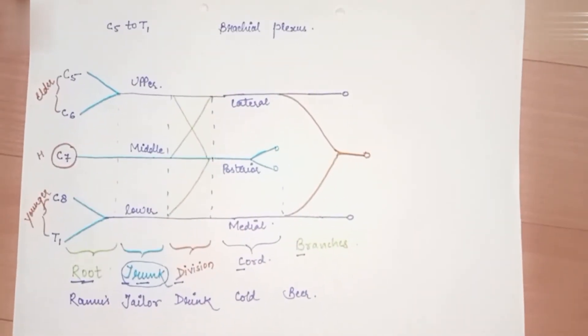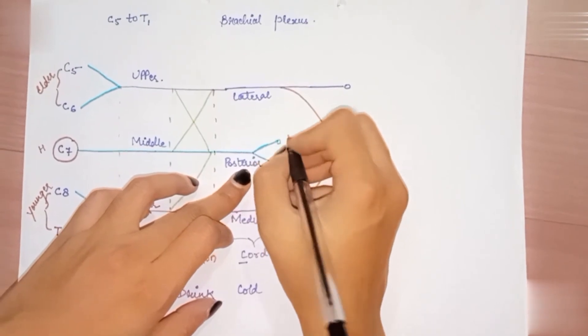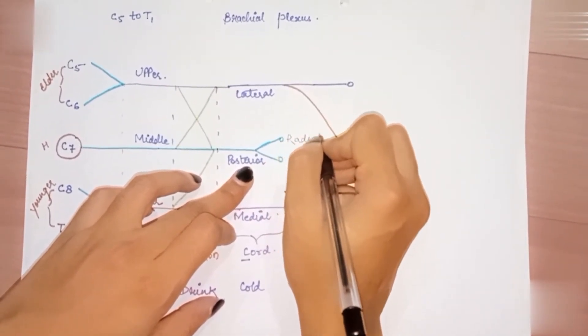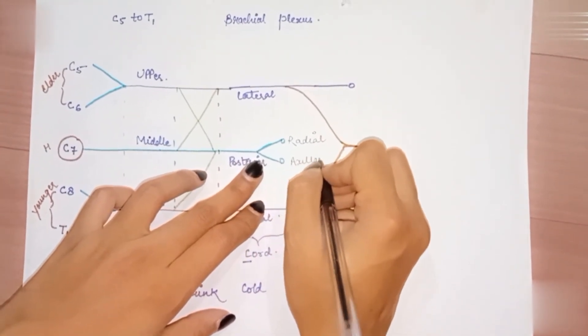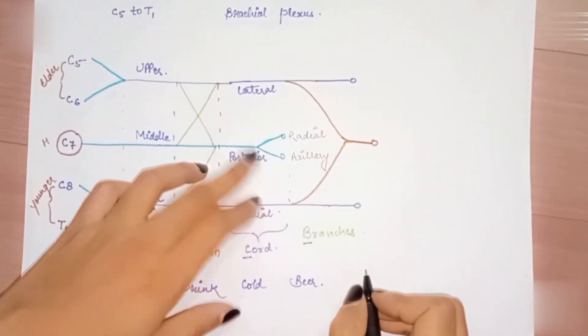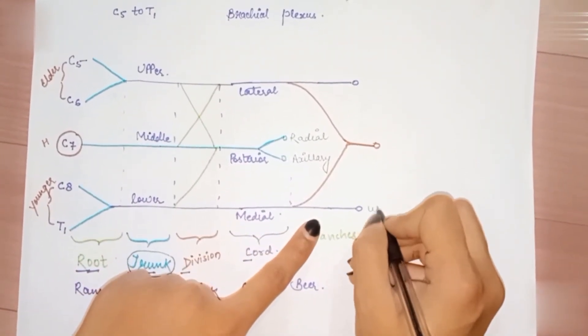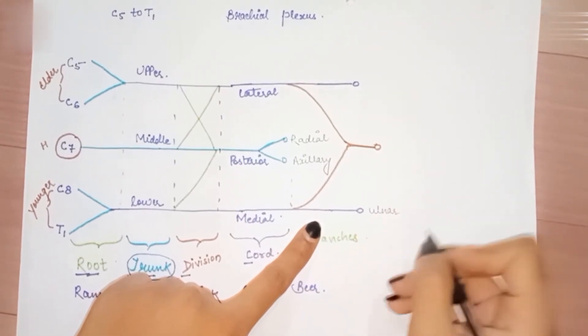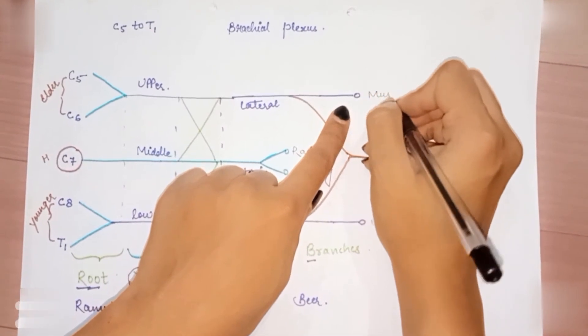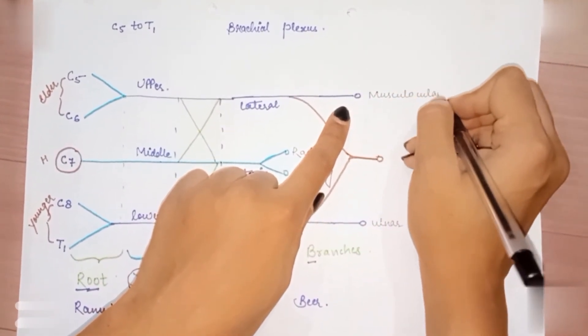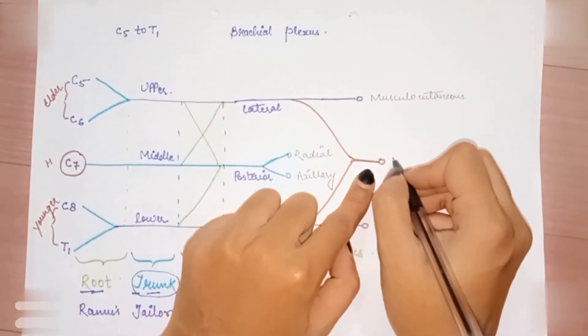Now a simple trick: C7's two feet are radial and axillary. That's two branches done. C8 and T1 goes to the ulnar nerve. C5-C6 is the musculocutaneous nerve. Four branches done. Finally, the fifth one is C7 median nerve.